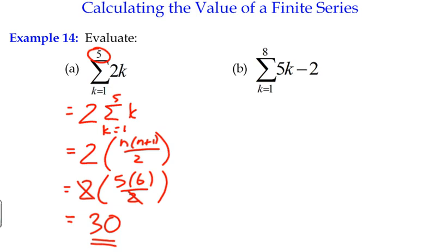What happens when there's a constant term adding or subtracting? Well again, let's just have a look at what we would do if we were doing it in full. We would start with k as 1, which is 5 minus 2. I'm going to write it out like that. Plus, when k is 2, it would become 10 minus 2. And when k is 3, it would become 15 minus 2, and so on.